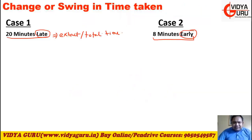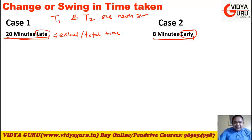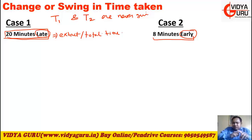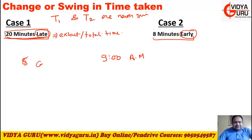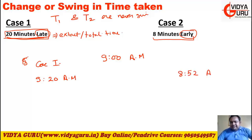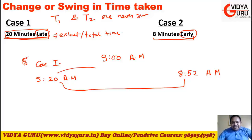In these questions, time one and time two are never given exactly. It is given in terms like 20 minutes late, 8 minutes early. These are not exact timings. What you have to notice is the change or swing in time taken between the two cases. If in one day you are 20 minutes late — say you wanted to reach at 9 am, so you reached at 9:20 am — and in case two you reached 8 minutes early, meaning at 8:52 am, then the swing in time is 20 plus 8 equals 28 minutes.